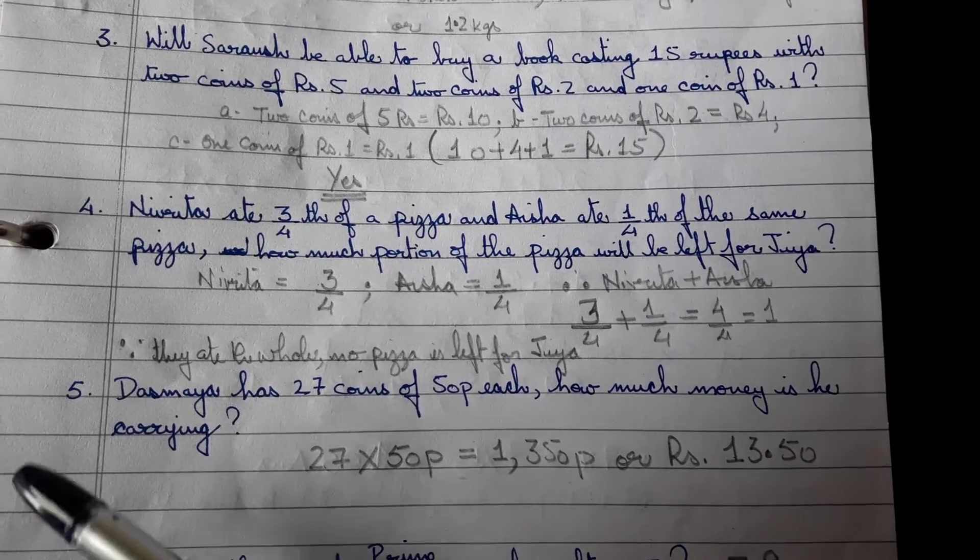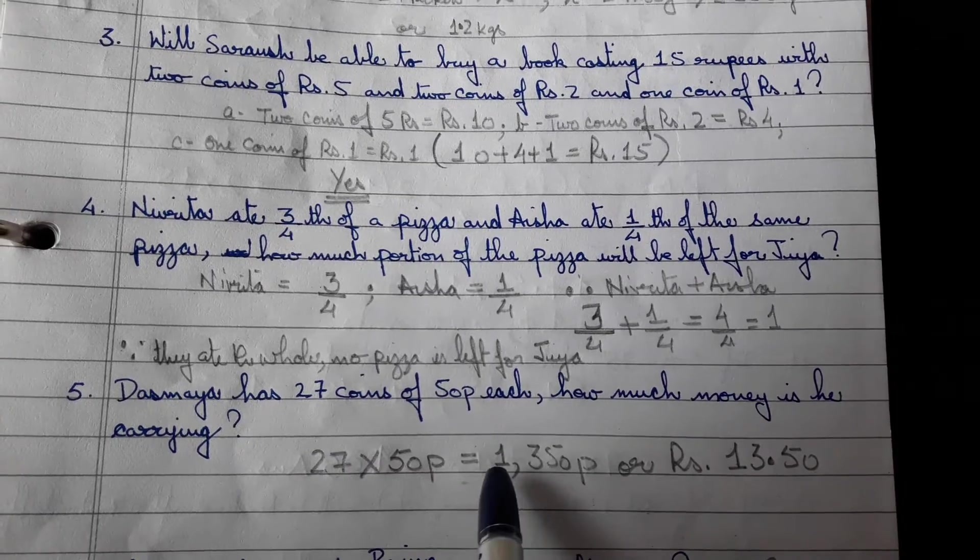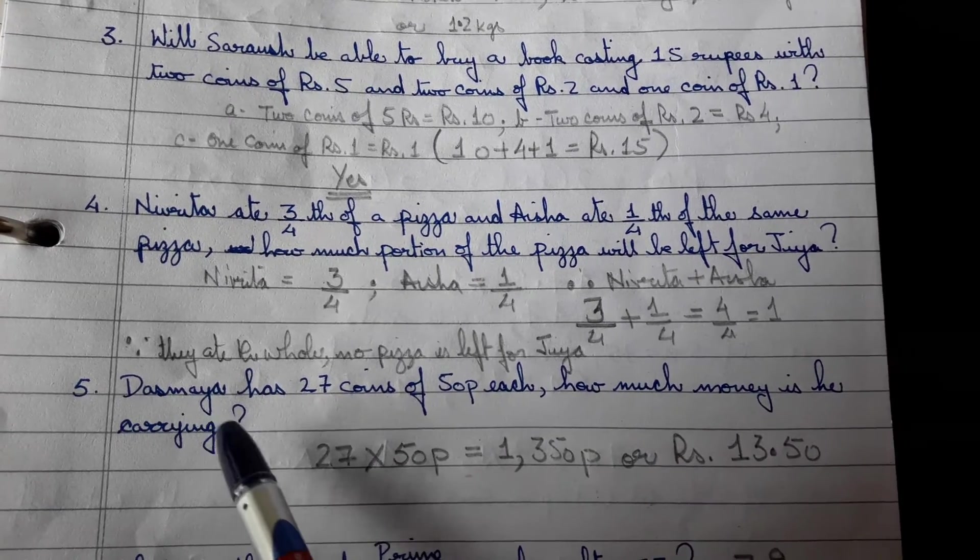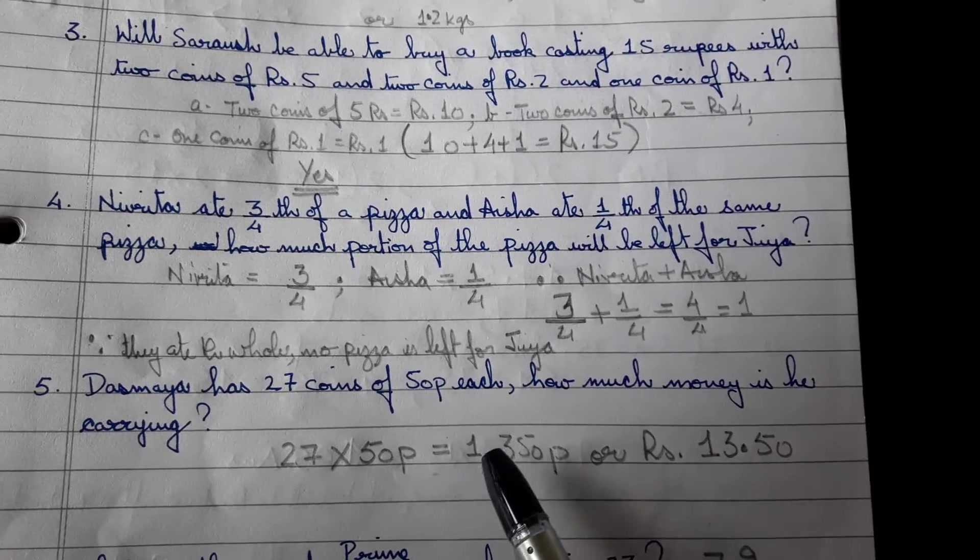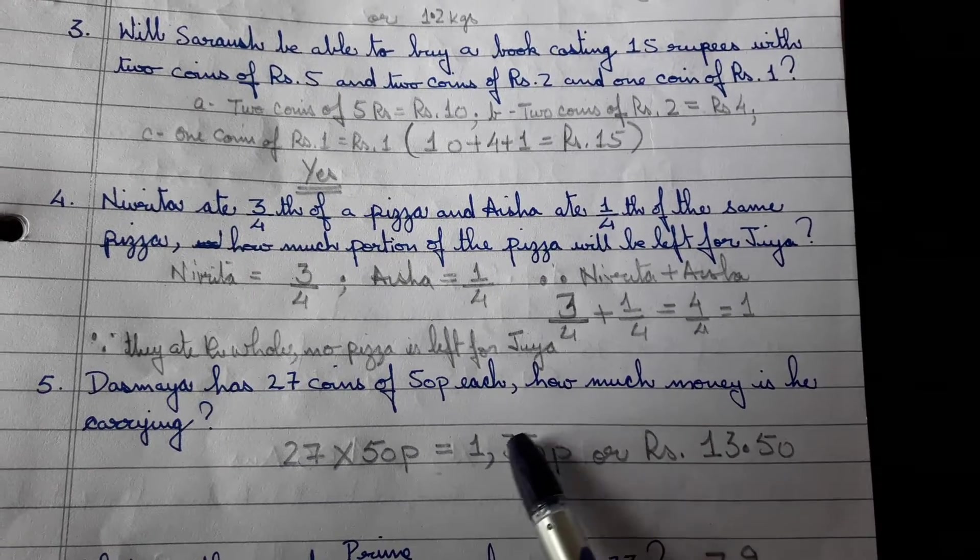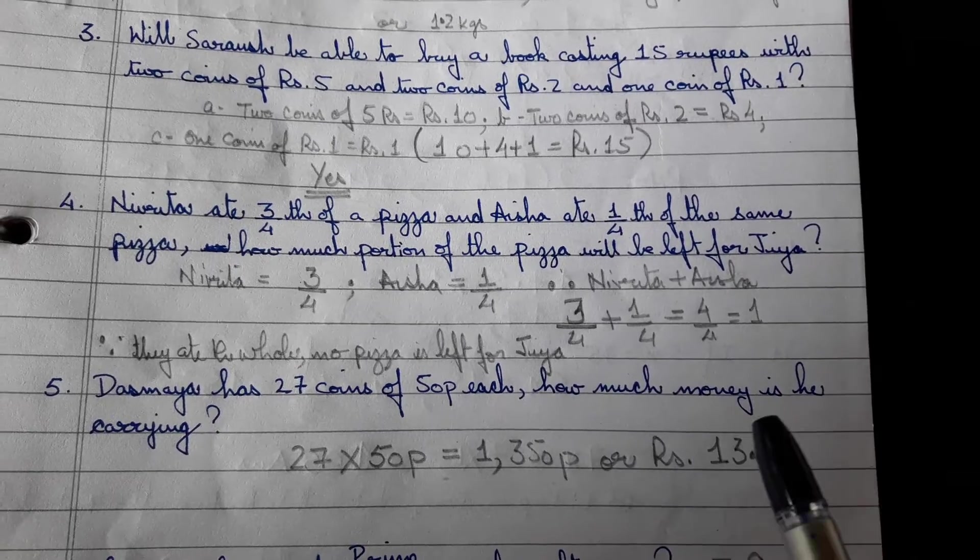Dasmaya has 27 coins of 50 paise each. How much money is he carrying? So just multiply it, 50 paise into 27. So you get 1,350 paise, which means 13 rupees 50 paise.